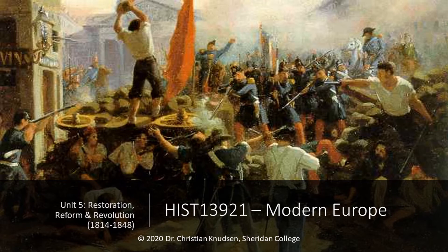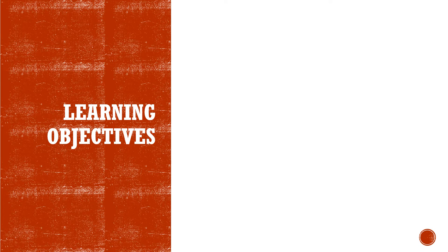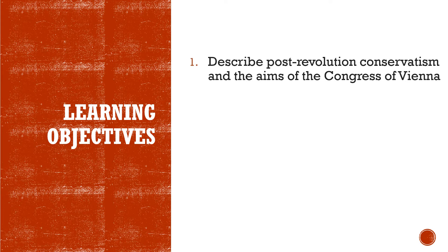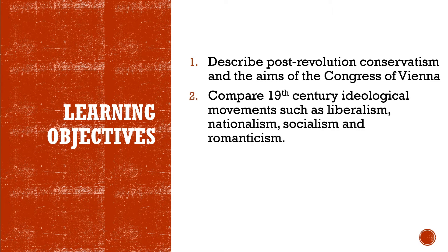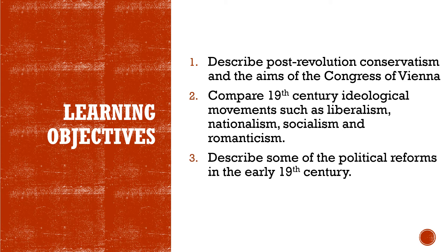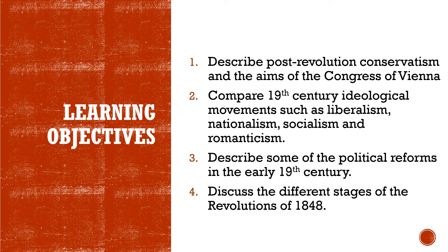We've got lots of stuff to cover, so let's just jump right in. The learning objectives for Unit 5 are: 1. Describe post-revolution conservatism and the aims of the Congress of Vienna. 2. Compare 19th century ideological movements such as Liberalism, Nationalism, Socialism and Romanticism. 3. Describe some of the political reforms of the early 19th century. 4. Discuss the different stages of the Revolutions of 1848.